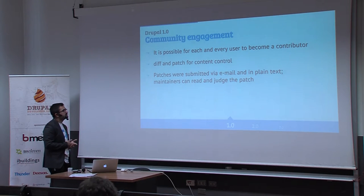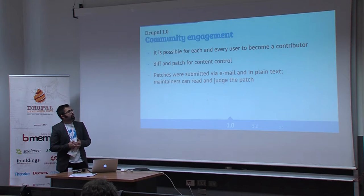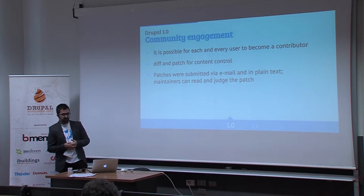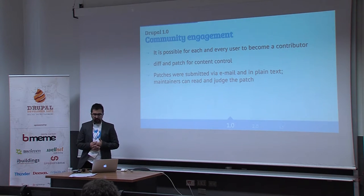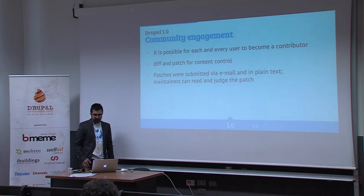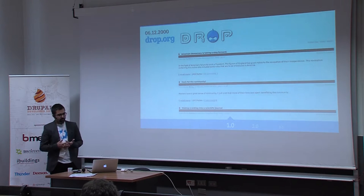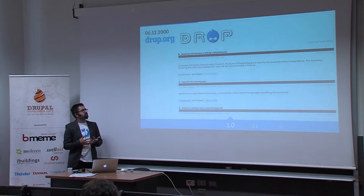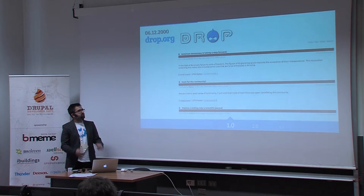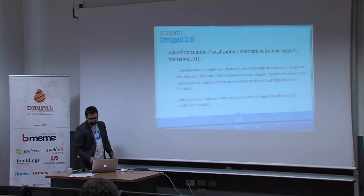From the first version Drupal is open source and GPL licensed, and each user could become a contributor. This was done using patches for version control instead of directly committing to the CVS repository, providing better control without touching the branch. At the time, patches would be submitted directly to Dries in plain text through email. The only Drupal site actually running at the moment was drop.org itself, and soon discussions about Drupal began to take place there.